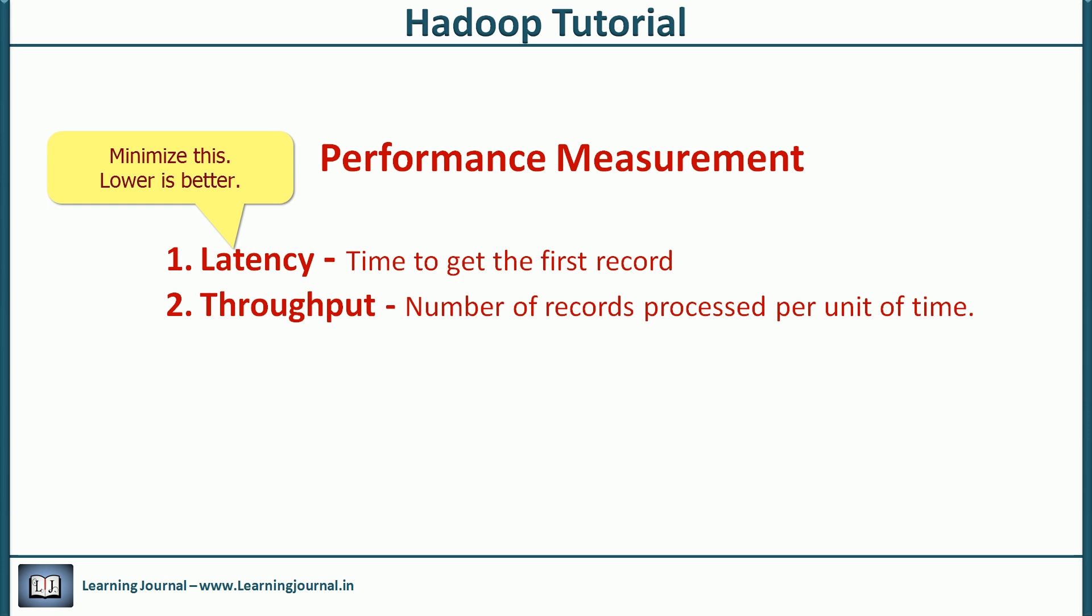Throughput is the number of records processed per unit of time. So, if your goal is to handle huge volume of data, your focus should be to get the highest throughput rather than lowest latency. The focus of HDFS is to maximize the throughput. It was a key design goal of HDFS and probably that's why Hadoop is not a good choice for interactive requirements because it doesn't offer you the best possible latency. It gives you an excellent throughput and hence minimizes the total time to process your large data set.